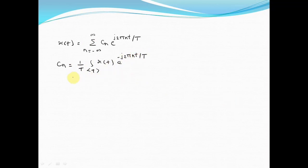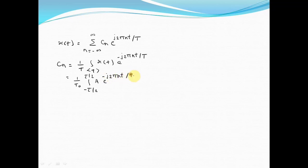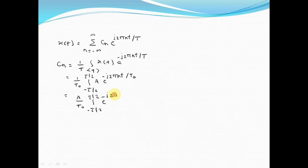Now let us substitute all the values. From the diagram we know that the value of capital T is T0. So it becomes 1/T0, with limits from minus tau by 2 to plus tau by 2. The amplitude is A, giving A times e raised to minus j2πnt divided by T0. Since A is a constant, we take it outside the integration: A divided by T0, integrated from minus tau by 2 to plus tau by 2.